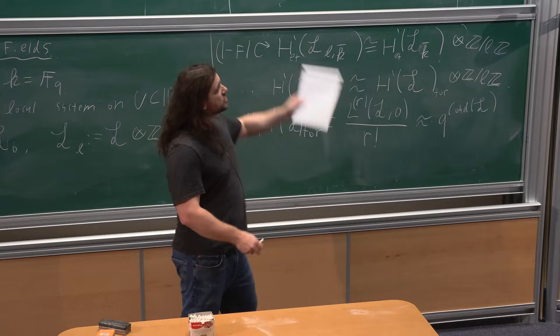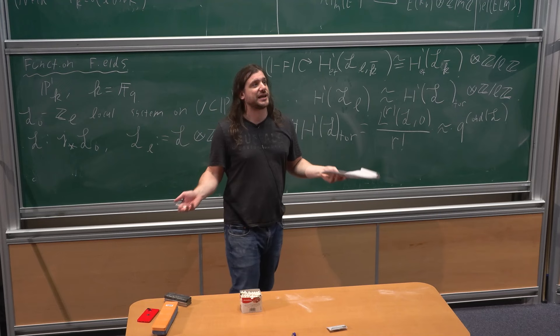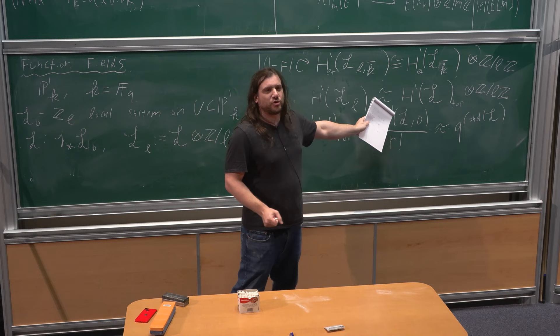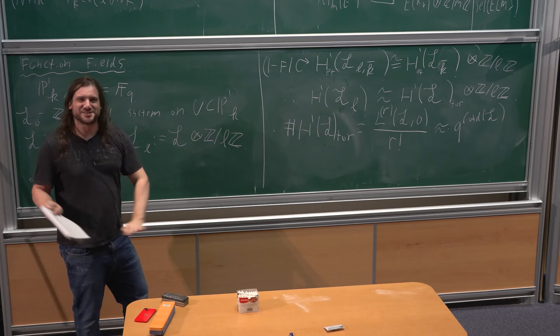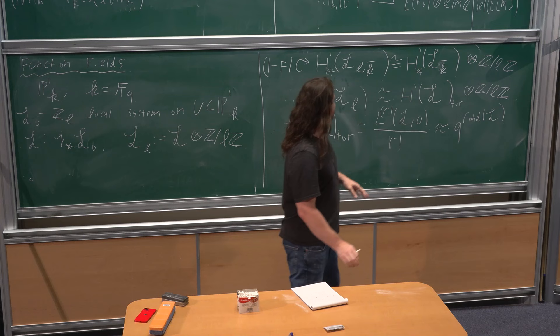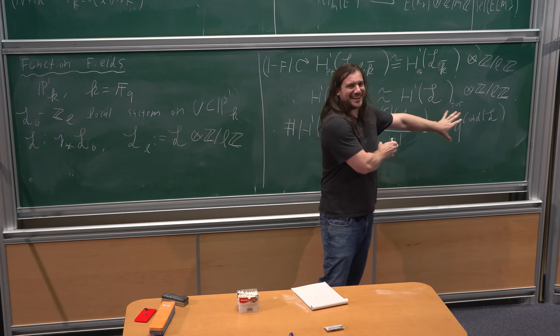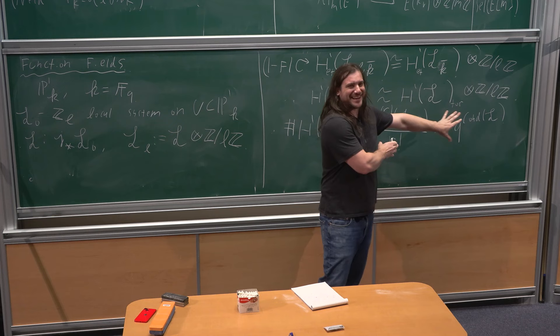So the result I gave at the beginning for number fields, assuming that whole spate of conjectures, is completely unconditional in the function field case. The function field analog validates the approach: if you believe the analogy with function fields, the number field story, even though it looks very conjectural, at least feels somewhat believable. I'll stop here—thank you very much.